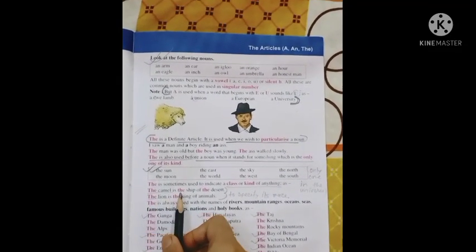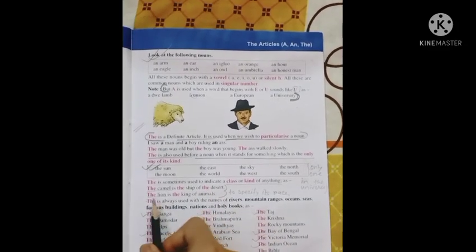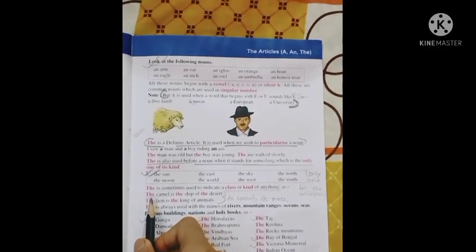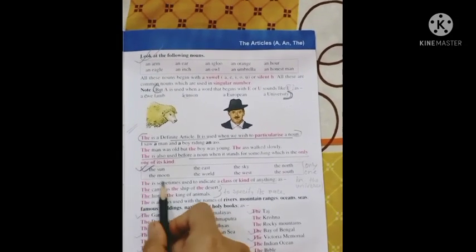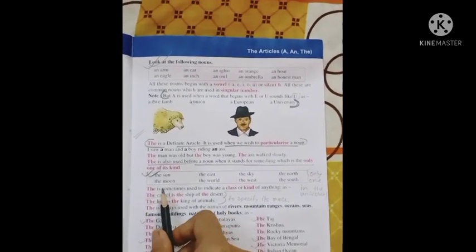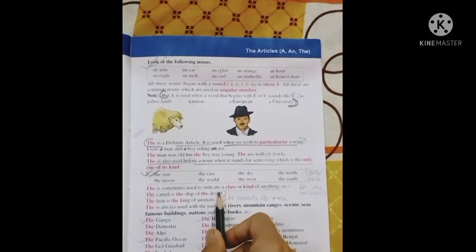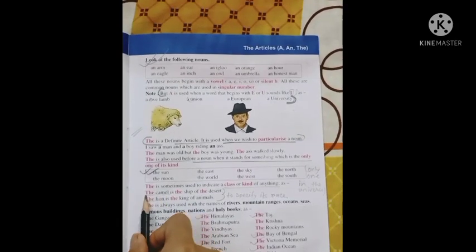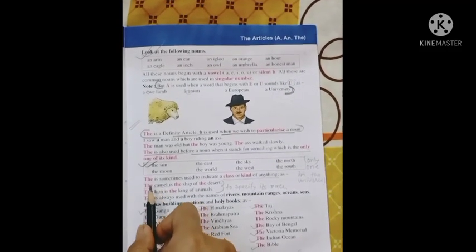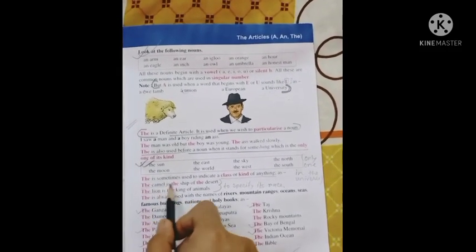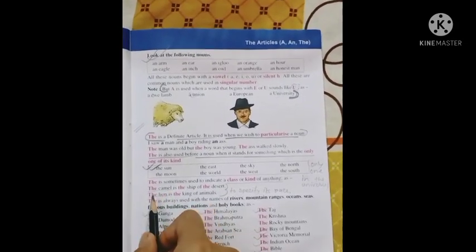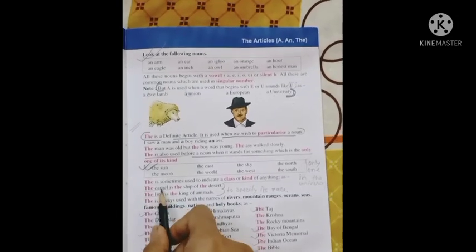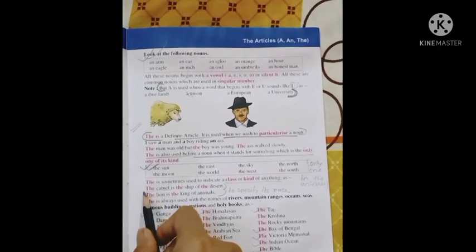The camel is the ship of the desert. The lion is the king of animals. Here we use 'the' to specify its kind, its race. The is sometimes used to indicate a class or kind of anything. So this camel is specified with 'the' to indicate its race. The is used before 'lion' because it refers to all lions.